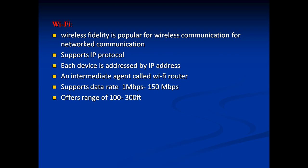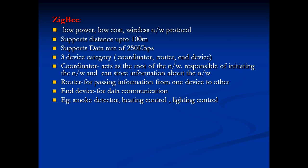Bluetooth supports point-to-point and point-to-multipoint communications. A device can act as master or slave — one device acts as master and others as slaves. Wi-Fi (Wireless Fidelity) is popular for wireless network communication. It supports IP protocols and each device is addressed by an IP address. An intermediate agent called a Wi-Fi router connects multiple Wi-Fi devices. It supports data rates from 1 Mbps to 150 Mbps and offers a range of 100 to 300 feet.